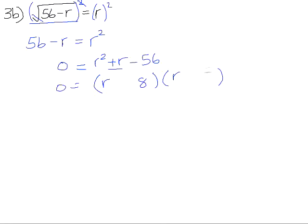That will give us, add up to 1, or have a difference of 1, are 8 and 7. We need to have positive 8 and a negative 7 in order to get positive 1 when we add our outers and our inners. So that means we can conclude that r is either negative 8 or positive 7.